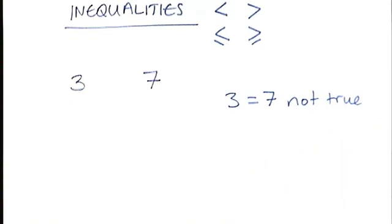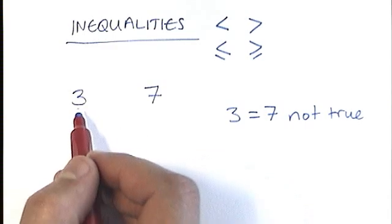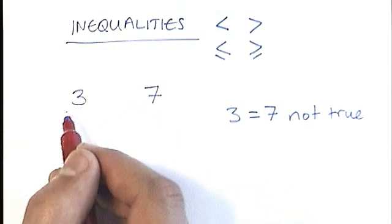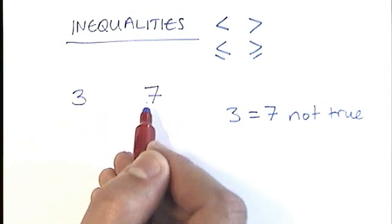We need to have a symbol in there which means less than or greater than. Let's have a think about a number line. Is 3 less than or is it greater than 7? We're reading from left to right here. 3 is less than 7.